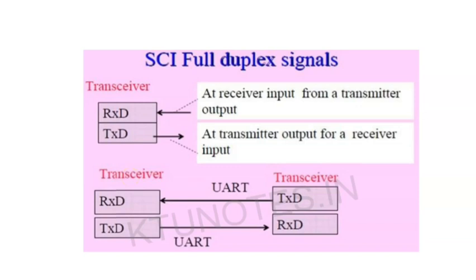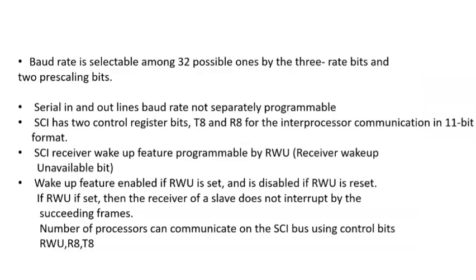The signals of SCI are: a receive line and a transmit line. The receive line receives input from the transmitter output — whatever the transmitter sends is received through the receive pin. The transmit pin is for sending data. The connection is very simple: receive and transmit lines are cross-connected at both ends, with only two lines.